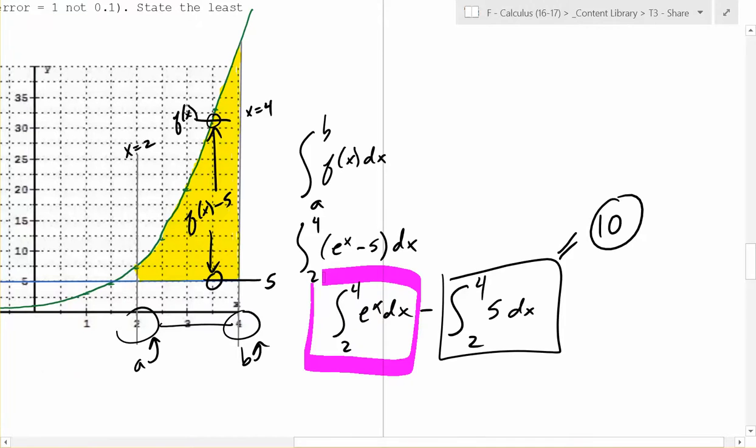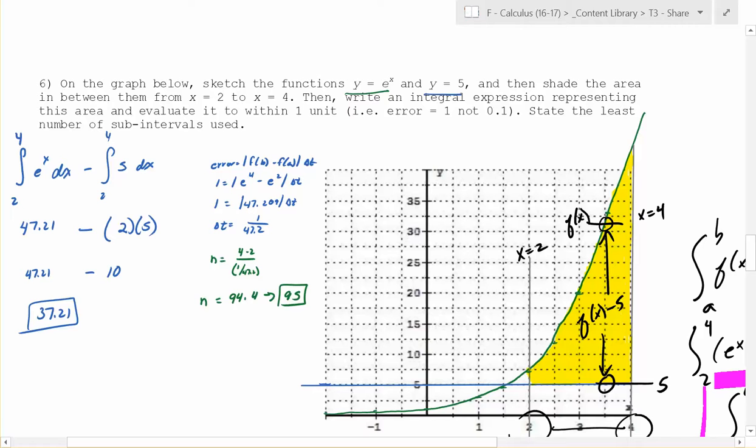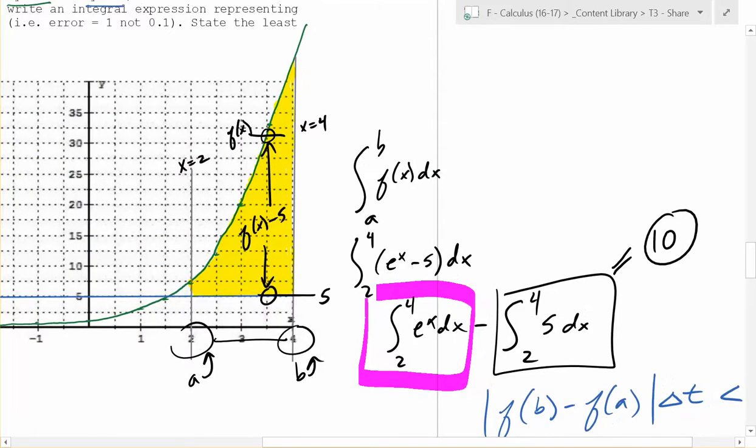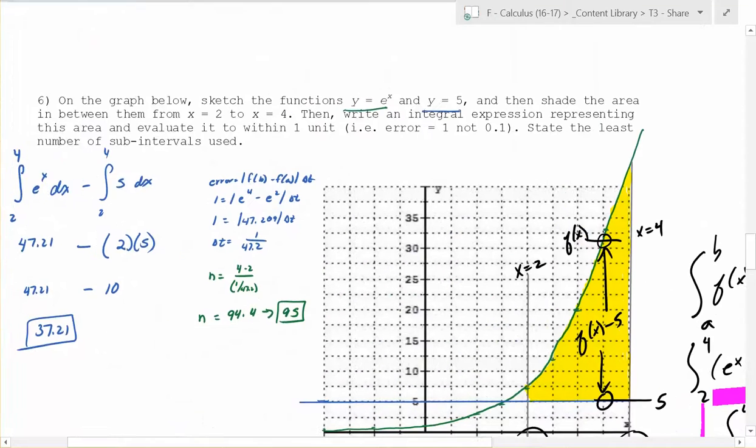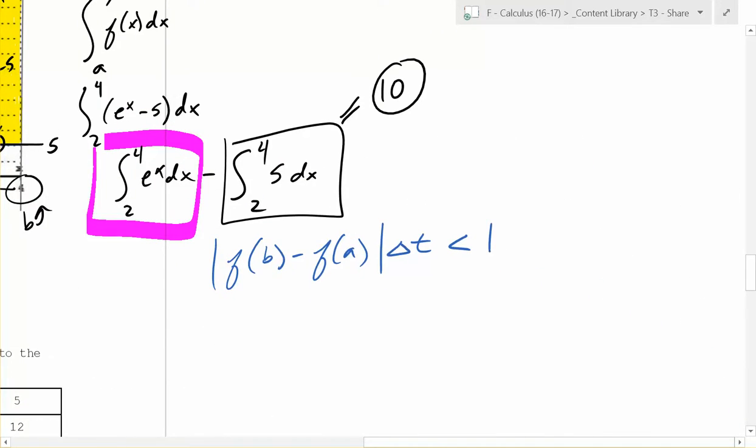So then all you're doing to answer this question is you are playing around with this right here. 2 to 4 of e^x dx. And what is it he's asking you to do? It says within one unit. Within one unit. So they want the error to be less than one. What was that formula we've used a bunch of times? You have to do like the f of b. It doesn't matter because it's absolute value, but let's do f(b) minus f(a).